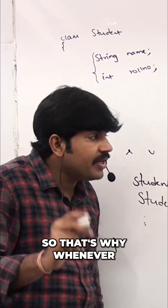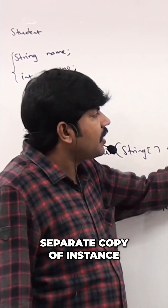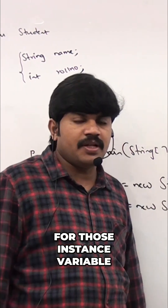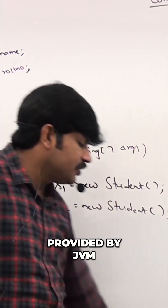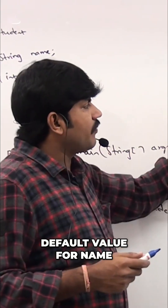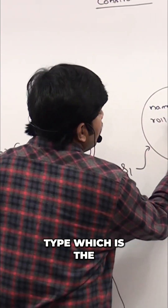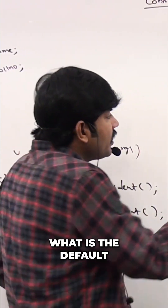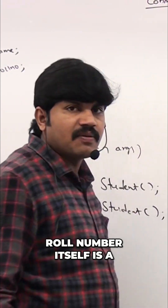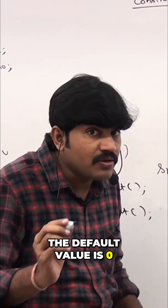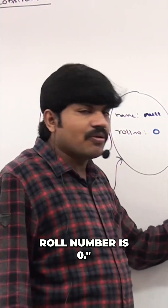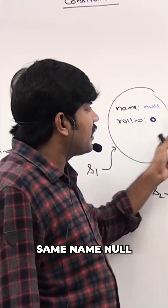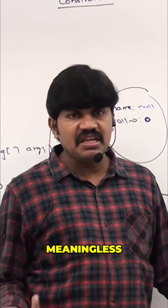Whenever we create an object, for every object a separate copy of instance variables will be created, and for those instance variables default values will be provided by JVM. The default value for name, which is a String type, is null. The default value for role number, which is int, is zero. So within a class, all 600 students would have the same name null and the same role number zero — which is meaningless.